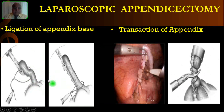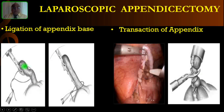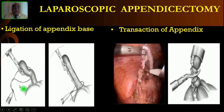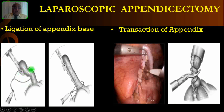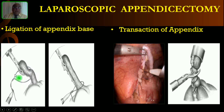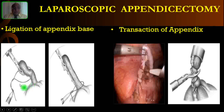After cutting the meso-appendix, the appendix will become pale because you have cut off the blood supply. The appendix, which was pink before cutting the meso-appendix, will now become very pale in color — that means you have done an adequate job. Then you have to use endo-loops. These are either commercially available or you can make your own, which is cheaper. I usually use catgut or vicryl for this.